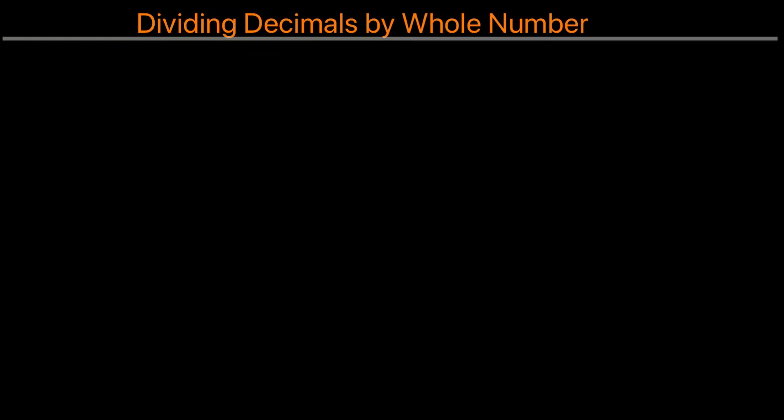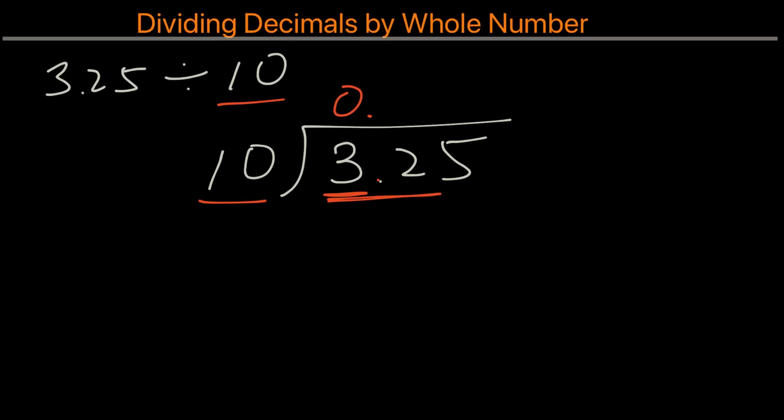Here's another one. Again, we can see that the divisor is a whole number. And we'll write out division like so. Now in this case, we take 3 divided by 10. We can see that the 3 is too small. So we'll place a 0 right here with a decimal point to align. And then we'll skip over to 32 to the next space.